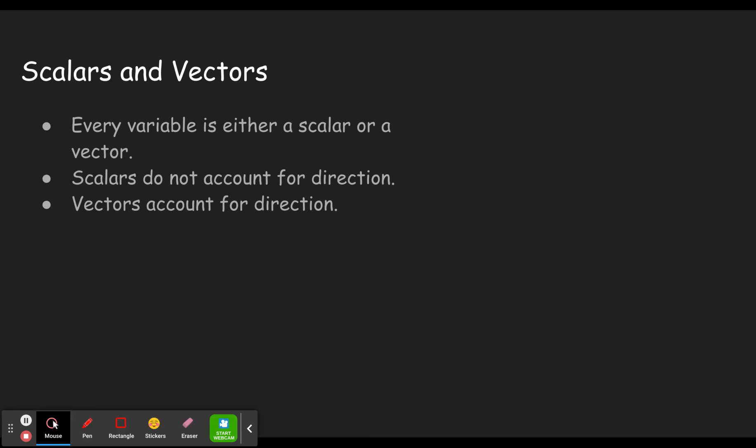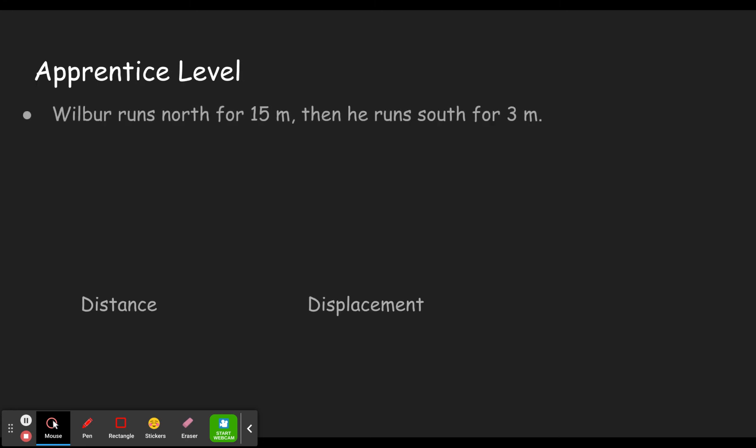Let's go ahead and go through the examples. The examples in this concept folder are fairly simple. We'll get to scalars and vectors in more detail later. So first of all, the apprentice level. Wilbur runs north for 15 meters, then runs south for three meters.